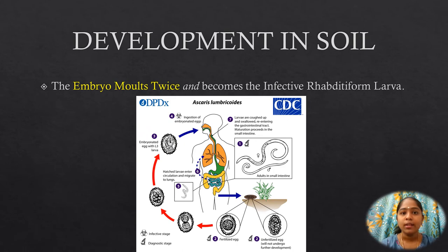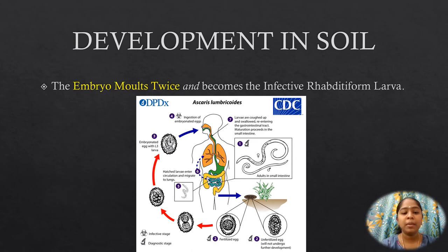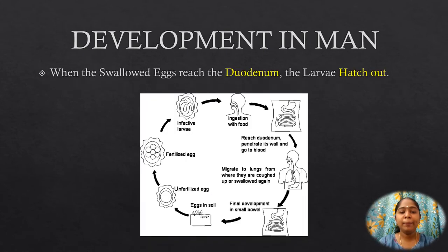Development in the soil. The fertilized egg passed in the feces is not immediately infective; it must undergo a period of incubation in the soil before acquiring infectivity. The eggs are resistant to adverse conditions and can survive for several years. Development usually takes 10 to 40 days, during which the embryo molts twice and becomes the infective rhabditiform larva coiled within the egg.